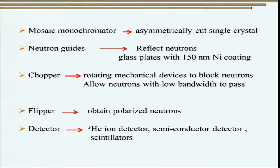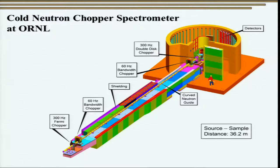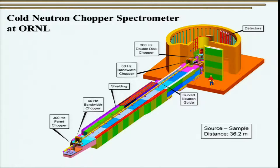The most important part of a neutron diffraction setup is the detector. The most common detector is the helium-3 ion detector, a gas-filled detector. Semiconductor detectors and scintillator detectors are also used. Shown here is a schematic of the cold neutron chopper spectrometer at Oak Ridge National Laboratory: it includes a Fermi chopper, a bandwidth chopper, shielding, neutron guides, and the sample position, with detectors arranged around it. The source-to-sample distance is as large as 36.2 meters, and everything is shielded. This instrument demonstrates why high scattering angles can be accessed using the spallation source.